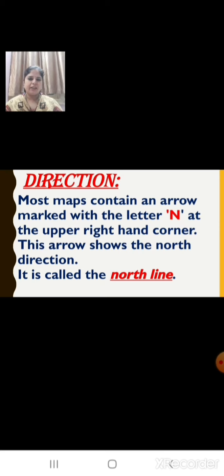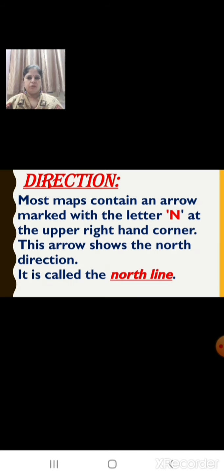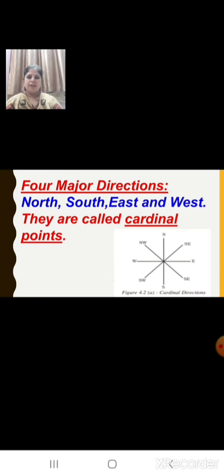Now let us learn the second component of a map: direction. Most maps contain an arrow marked with the letter N at the upper right-hand corner. N stands for North. This arrow shows the north direction and is called the North Line. When you know the North direction, you can easily find the other directions on the map. There are four major directions: North, South, East, and West.